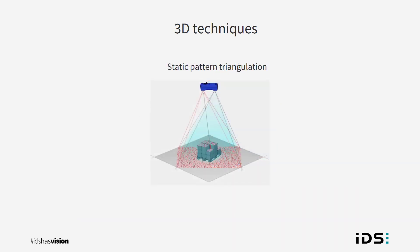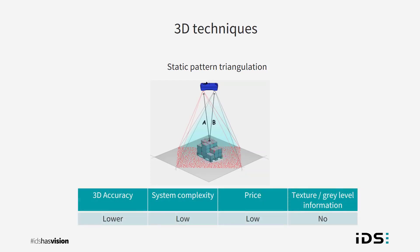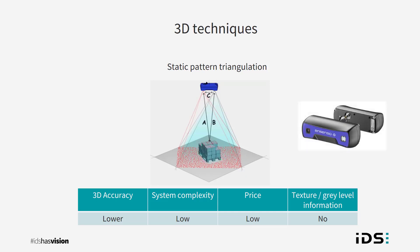Static pattern triangulation utilizes a known pattern projected onto a scene and the points are then mapped to the hard-coded positions of the projection to calculate the 3D data. This technique requires no movement in the scene but can also be used on dynamic moving scenes and is often a cost effective solution. However, the 3D resolution tends to be lower and it's not possible to extract the grey level texture because of the projected pattern. Our Incenso S camera works on this principle.